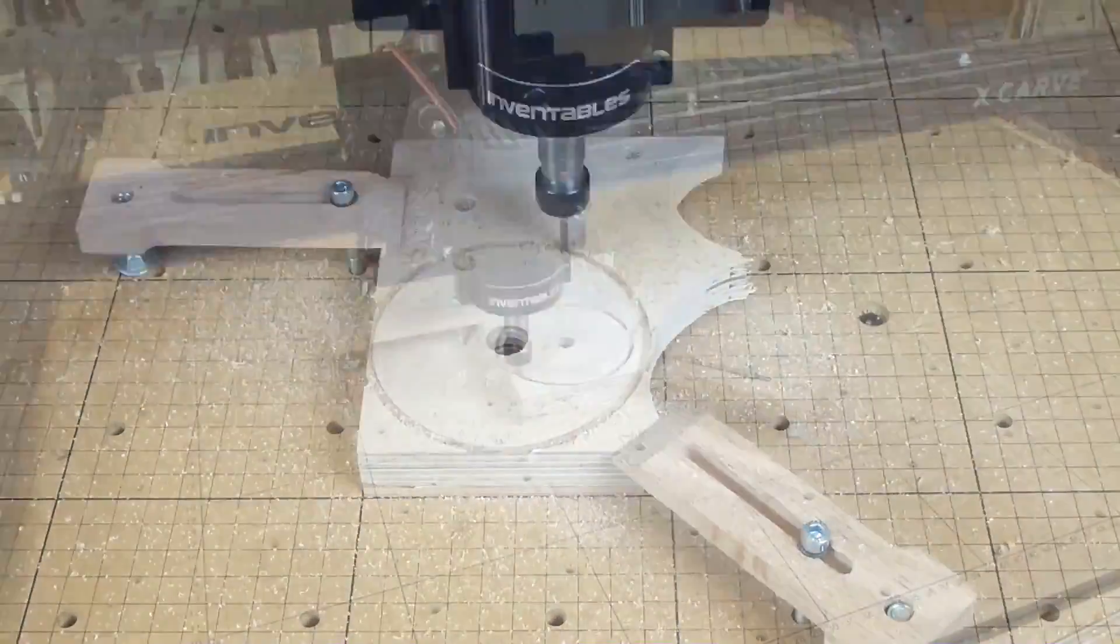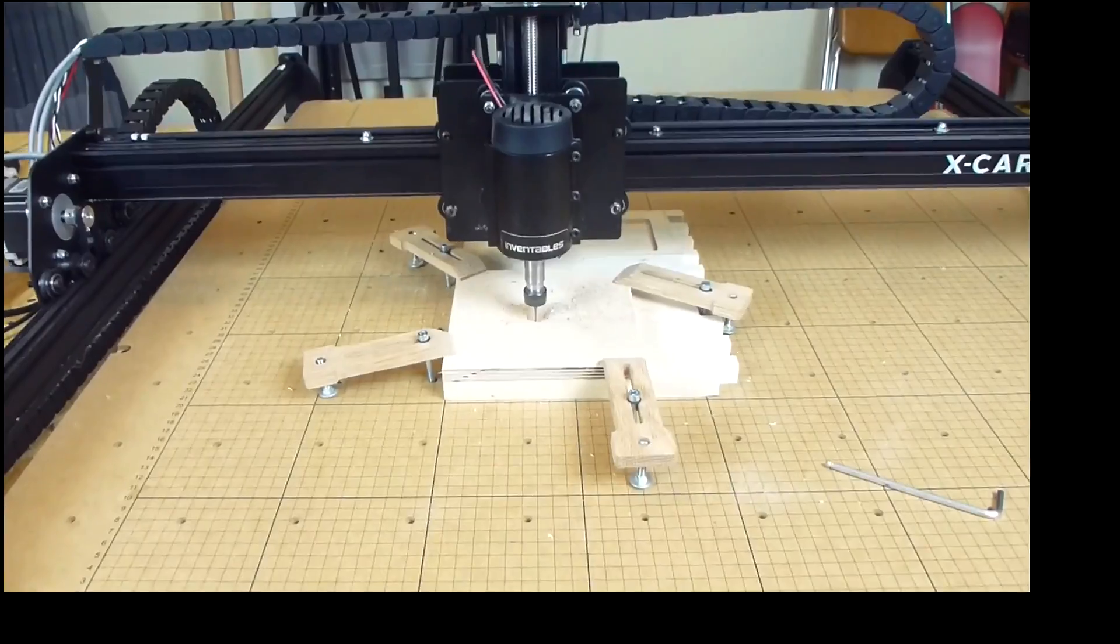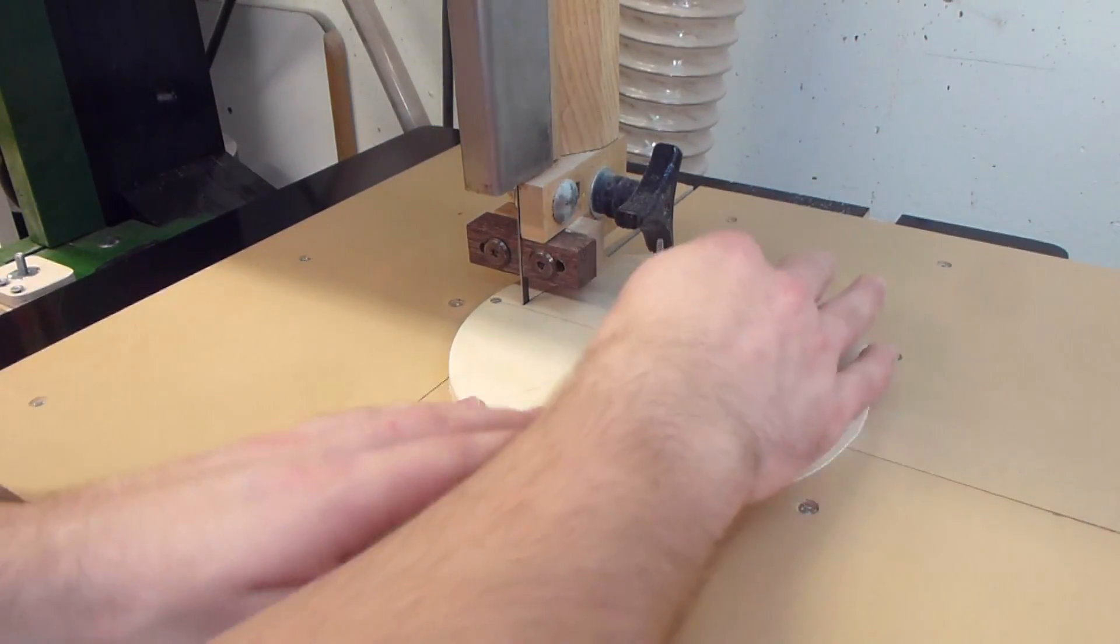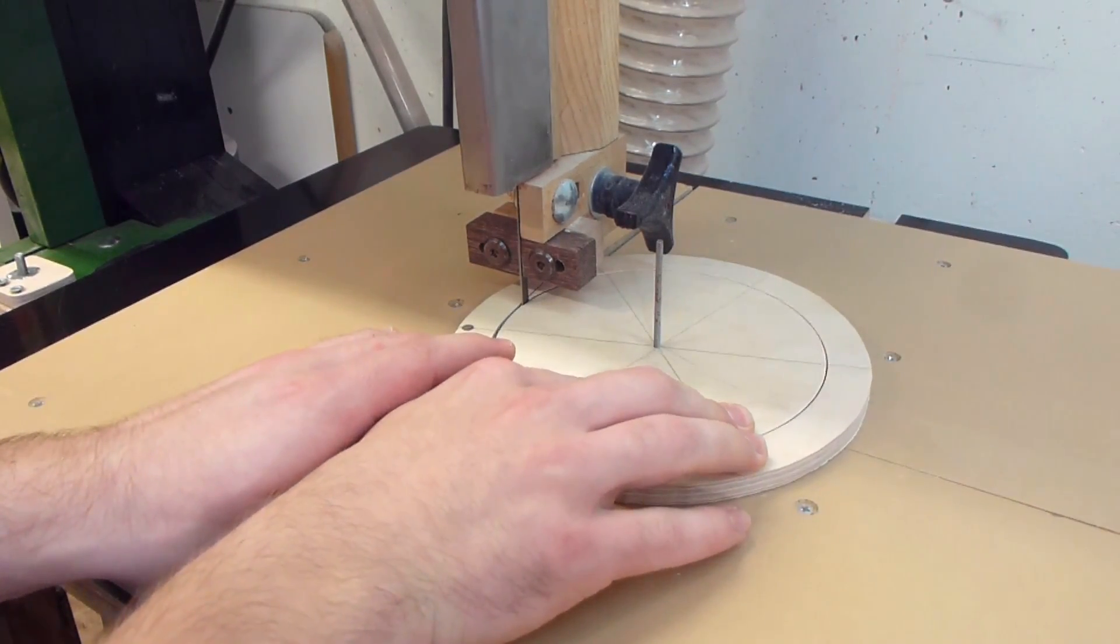To cut these out I used my X-Carve CNC that I got sponsored by Inventables. It doesn't really speed things up but it's very useful for cutting out the hexagonal shape for the nut. One of the discs I made with the bandsaw and that went a little bit faster.